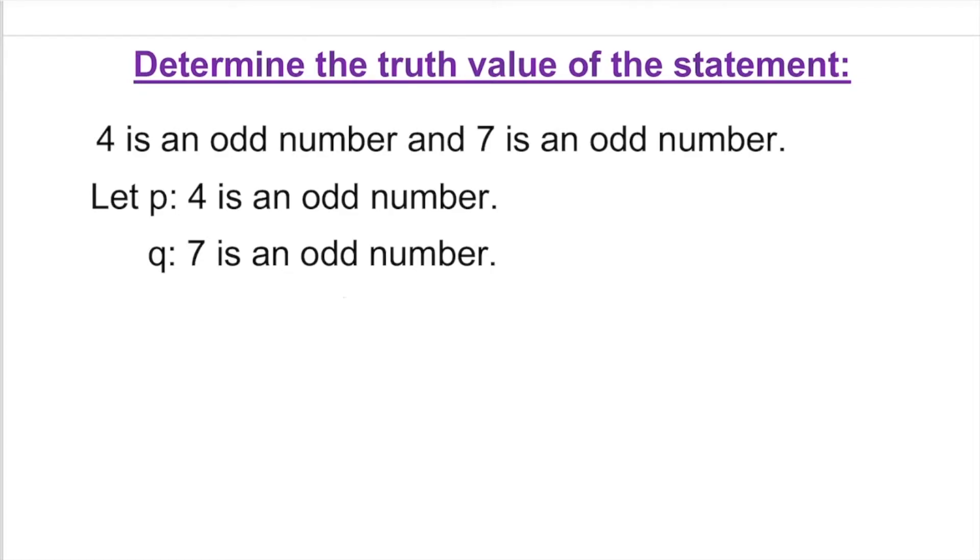If I look into the validity, in this case I would say 4 is an odd number - that is false. 4 can never be an odd number. 7 is an odd number, so that is true.